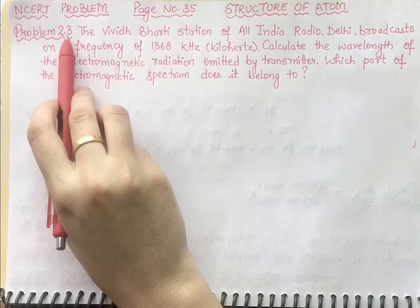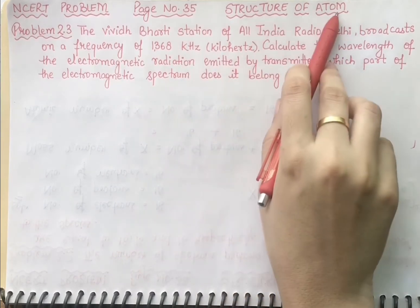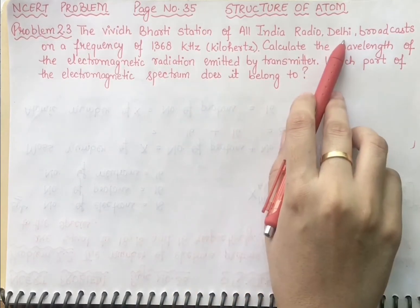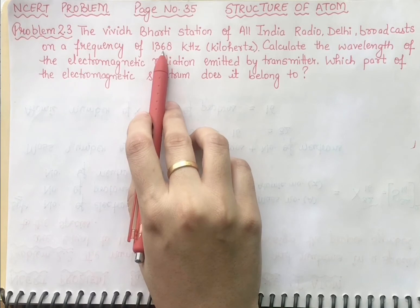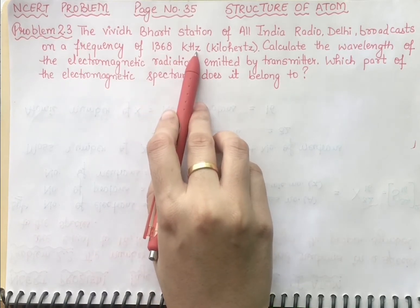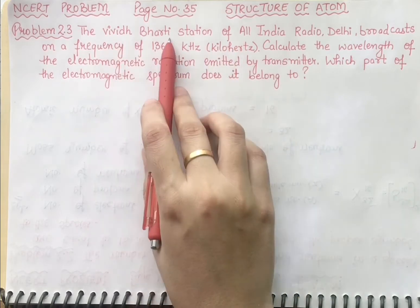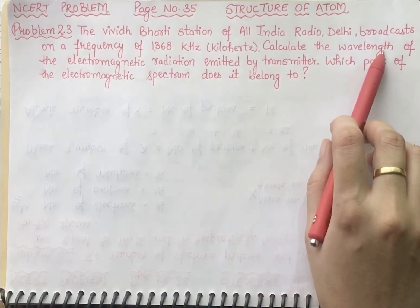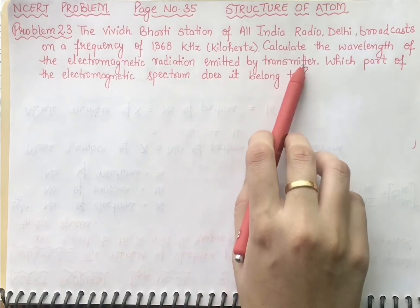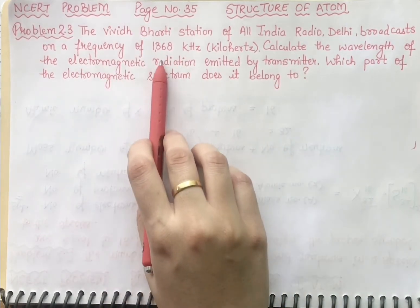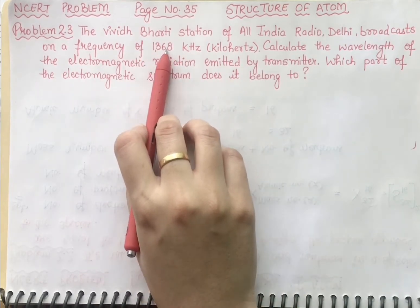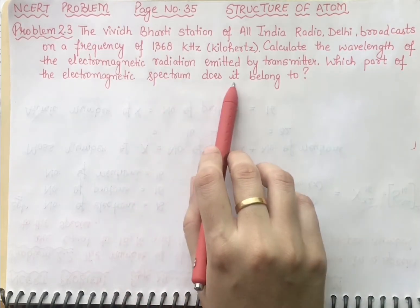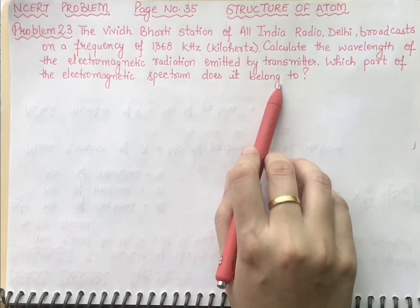This is NCRT problem 2.3 from page number 35 on Structure of Atom. The Vivid Bharati station of All India Radio Delhi broadcasts on a frequency of 1368 kilohertz. We need to find the wavelength of electromagnetic radiation emitted by the transmitter at this frequency, and also identify which part of the electromagnetic spectrum this wavelength belongs to.